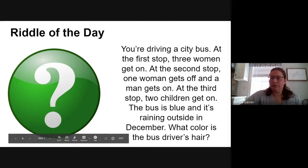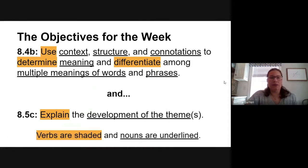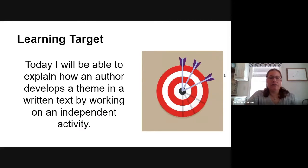So that was just a quick riddle. Let's review our objectives for the week. Again we've been focusing on connotation to determine the meaning of words and to differentiate among multiple meanings of words and phrases. Over the last day or so we've been really focusing on theme and how an author develops theme. Our learning target for today is that you'll be able to explain how an author develops a theme in a written text by working on an independent activity.